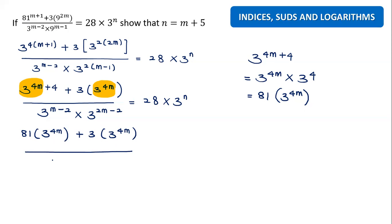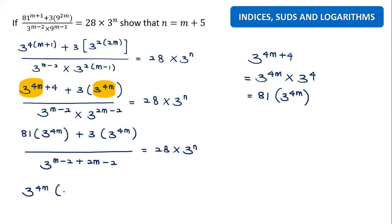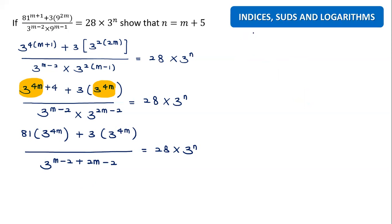Since the base is already equal and we have times, we can combine by adding exponents. On the bottom, as I told you, times and divide means we combine. I already combined the bottom. On top, I'm going to factorize now — I'm going to take out the 3 to the power 4m. So if I factorize, I get 3 to the power 4m with 81 plus 3 at the bottom of the bracket.